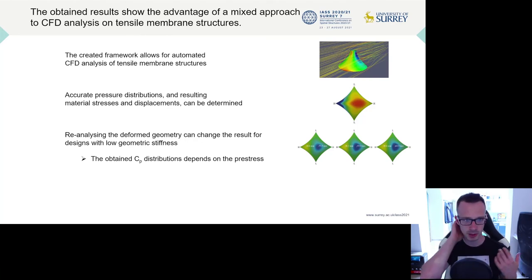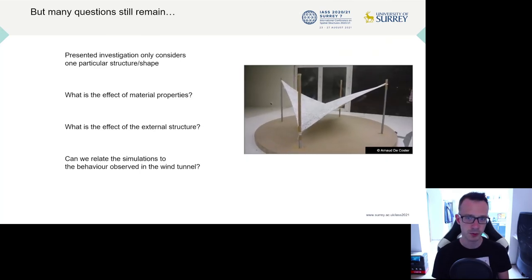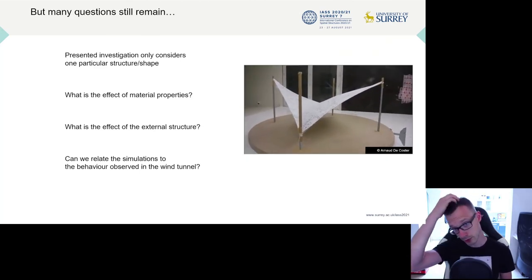So the created framework allows for an automated CFD analysis, which makes the work relatively easy. It not only is able to accurately predict pressure distributions on a rigid structure, for instance, but it also allows the reanalyzing of the deformed geometry to get more accurate predictions of deformations, material stresses, and pressure distributions. And with this framework, we can start to explore even more things.